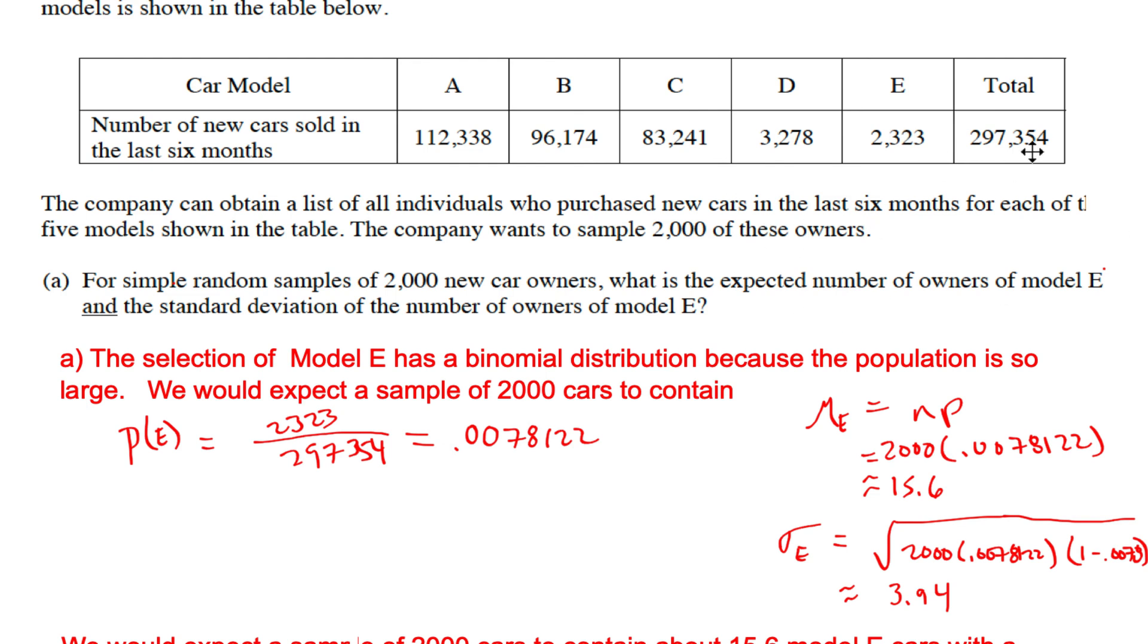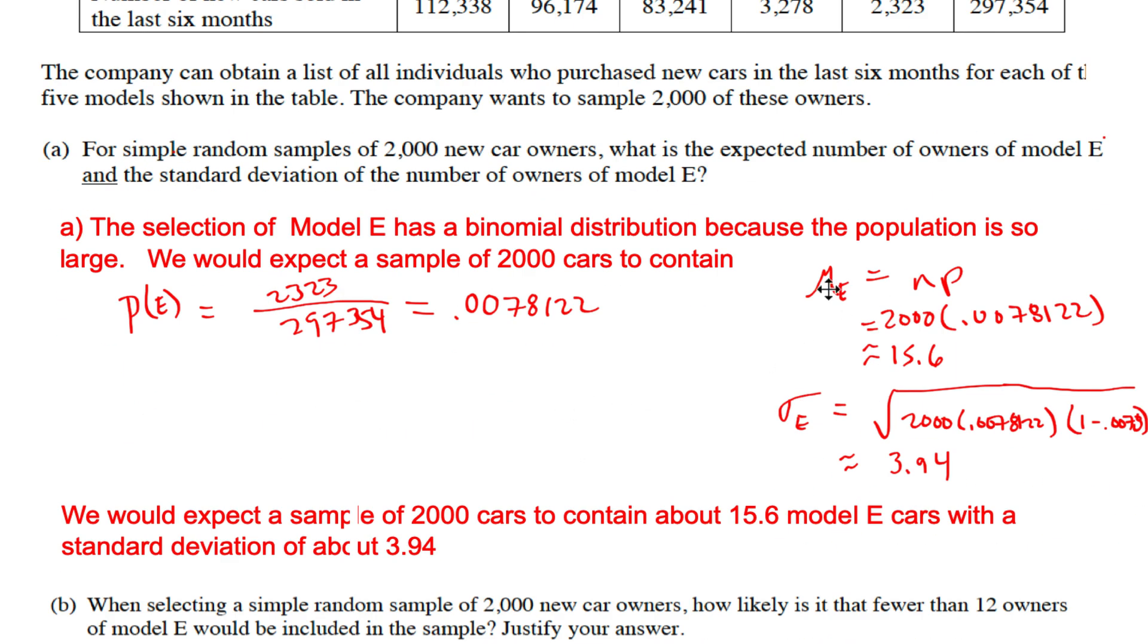If it's 2000, the total population is almost 300,000, so I can remove owners from the population. It's not going to change the probability that much because the population is so large. We would expect a sample of 2000 to contain, well divide it out, it's this decimal here, which is what, 0.78 percent. That's tiny. We should double check it because that's super tiny. So 2000 out of 300,000, that's less than one percent. 0.78 percent, okay, we're good.